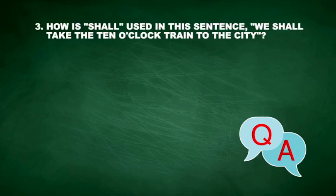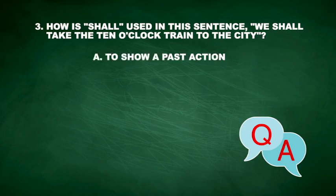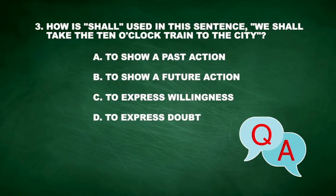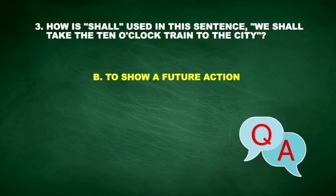Question 3: How is 'shall' used in this sentence? 'We shall take the 10 o'clock train to the city.' A, to show a past action. B, to show a future action. C, to express willingness. D, to express doubt. The correct answer is B. It is used to show a future action.